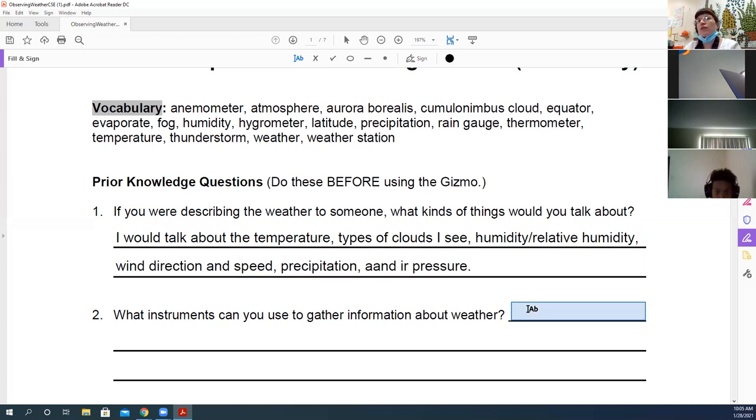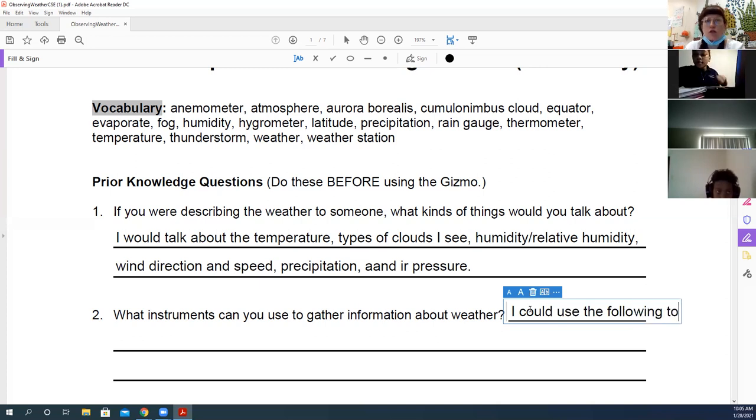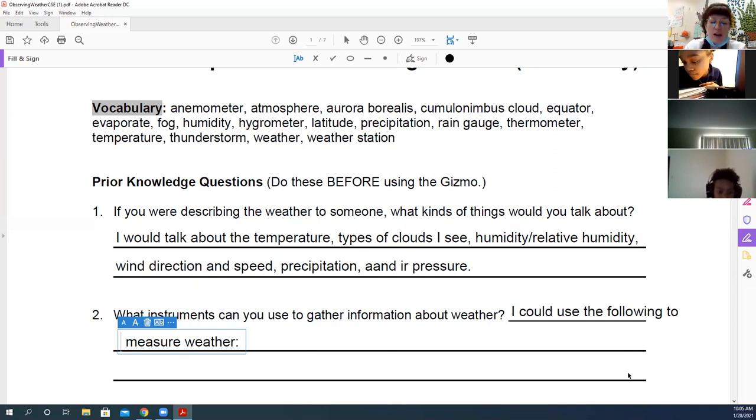What instruments? So we said one. What instruments could we use? So we could say I could use the following to measure weather. So we just said one. Bishop? Okay. Or it's called a hygrometer.